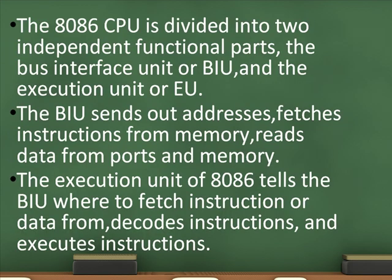The 8086 CPU is divided into two independent functional parts: the Bus Interface Unit or BIU, and the Execution Unit or EU. The BIU sends out addresses, fetches instructions from memory, and reads data from ports and memory. The Execution Unit tells the BIU where to fetch instructions or data from, decodes instructions, and executes instructions.